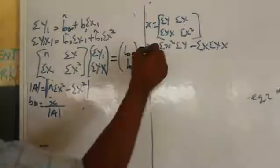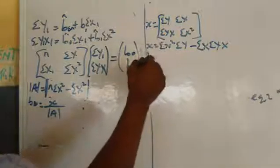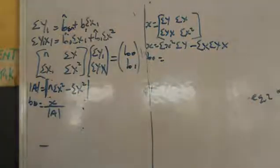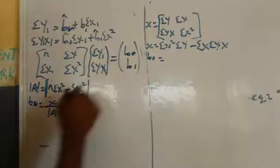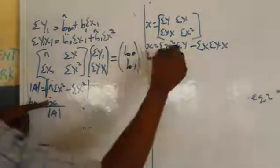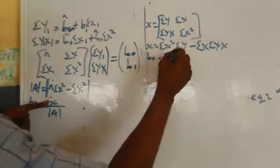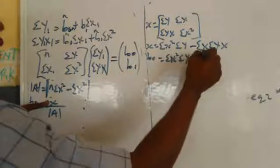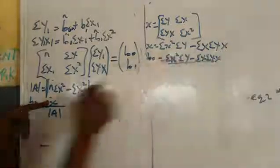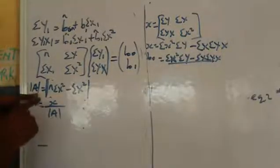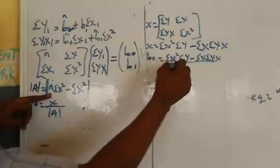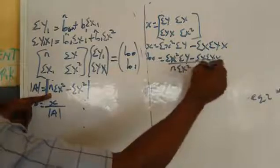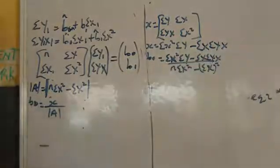So to get my b0, b0 equals small x over my determinant. My determinant is n·Σx-squared minus (Σx)². That's my b0.